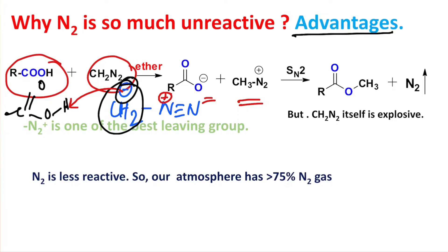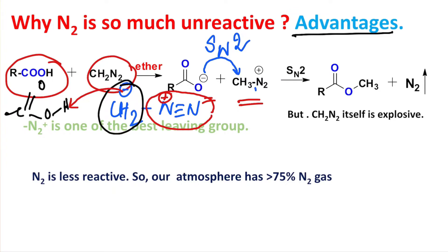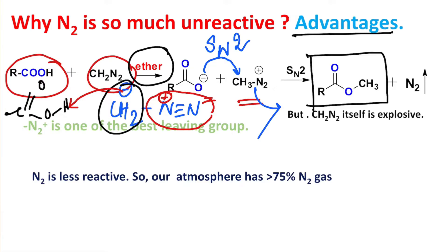Look at this molecule carefully — the negative charge on diazomethane is quenched. The methyl group is attached to N₂⁺, meaning the nitrogen-nitrogen triple bond carries a plus charge. If nitrogen takes back that bond, it becomes a neutral gas molecule and leaves. So the carboxylate anion attacks the methyl group via an SN2 mechanism, N₂ leaves, and a methyl ester is produced.